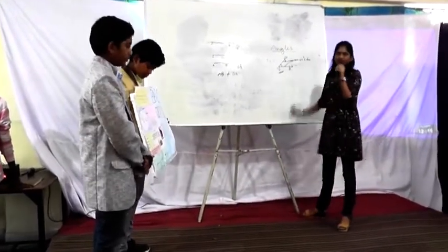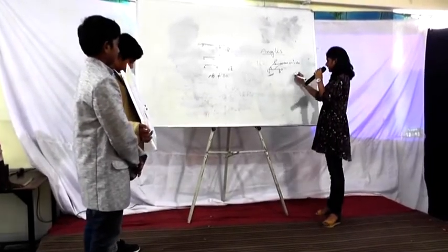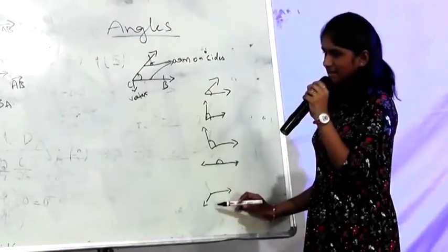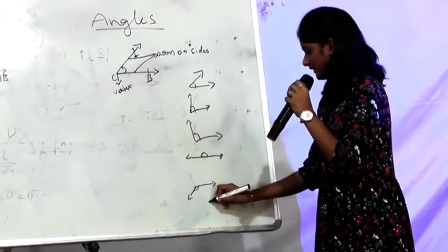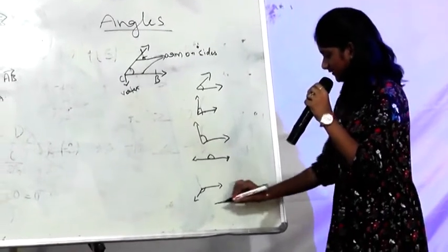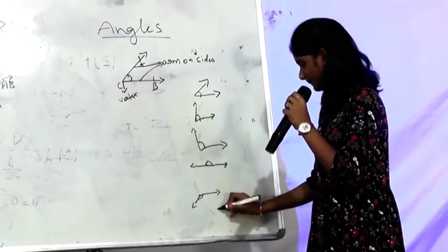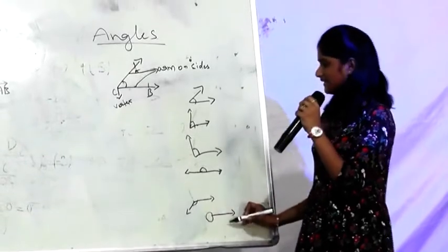Now there are six types of angles. One is acute angle. An acute angle is less than 90 degrees. And the last one is complete angle. This is a complete angle. It is exactly 360 degrees.